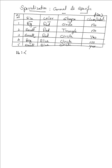Each of the three attributes has two instances. Our general hypothesis also has three attributes, so we put three question marks. In specialization, we have to consider even the negative hypotheses. The hypothesis we generate should be consistent with both positive and negative labels.